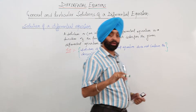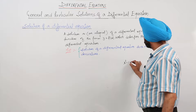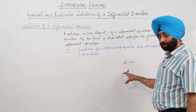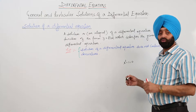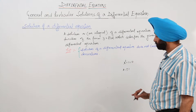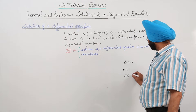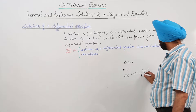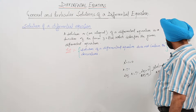We have gone through algebraic equations. Suppose we have x² - 1 = 0; then we have to show that the left-hand side is equal to the right-hand side. On solving, we get x = ±1. When we put x = ±1 on the left-hand side, it becomes 0, and the right-hand side is already 0. So x = ±1 is a solution.